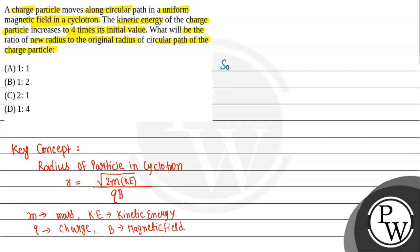We can write the solution part. We can write that is r equal to square root of two times mass times kinetic energy, and then whole divided by q times B.